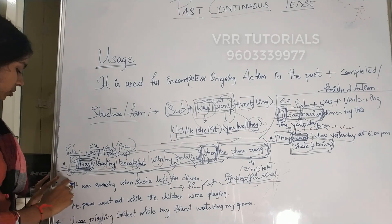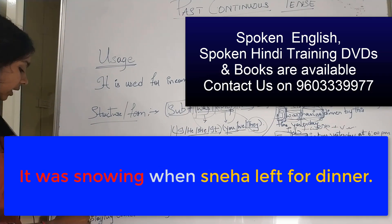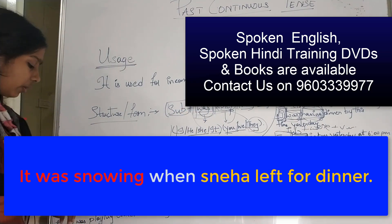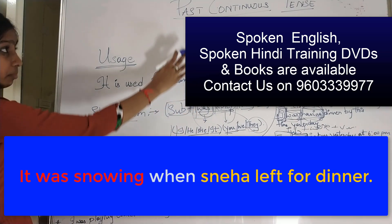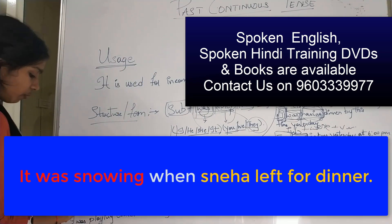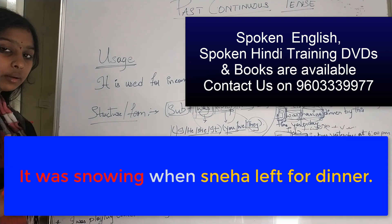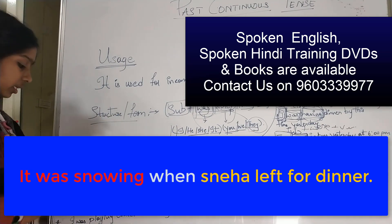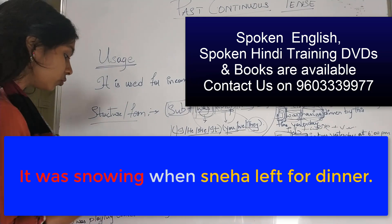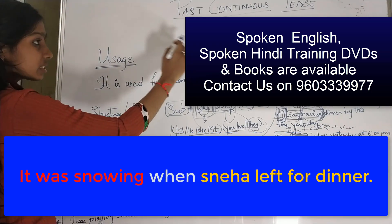If the subject is 'it', we use 'was'. So: it was snowing. 'It was snowing' — in the past, it was snowing. And we use past continuous tense for this.